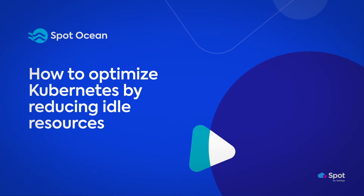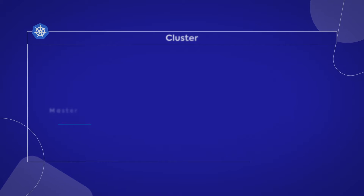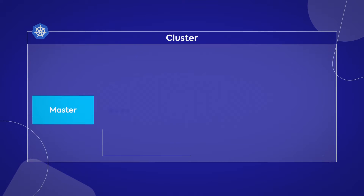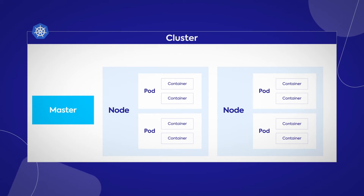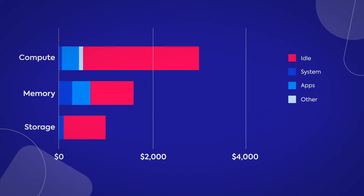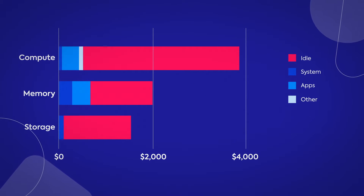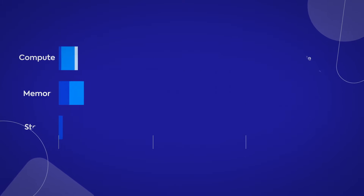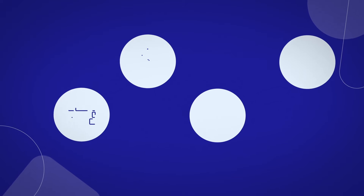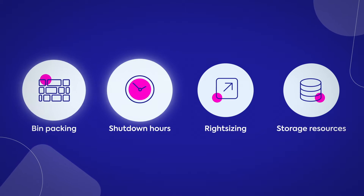How to Optimize Kubernetes by Reducing Idle Resources with SpotOcean. Kubernetes environments are extremely complex and dynamic, where resource usage changes by the minute, and you often pay for more capacity than you really need. In this video, we'll explore four effective techniques to minimize idle resources in your Kubernetes environment.